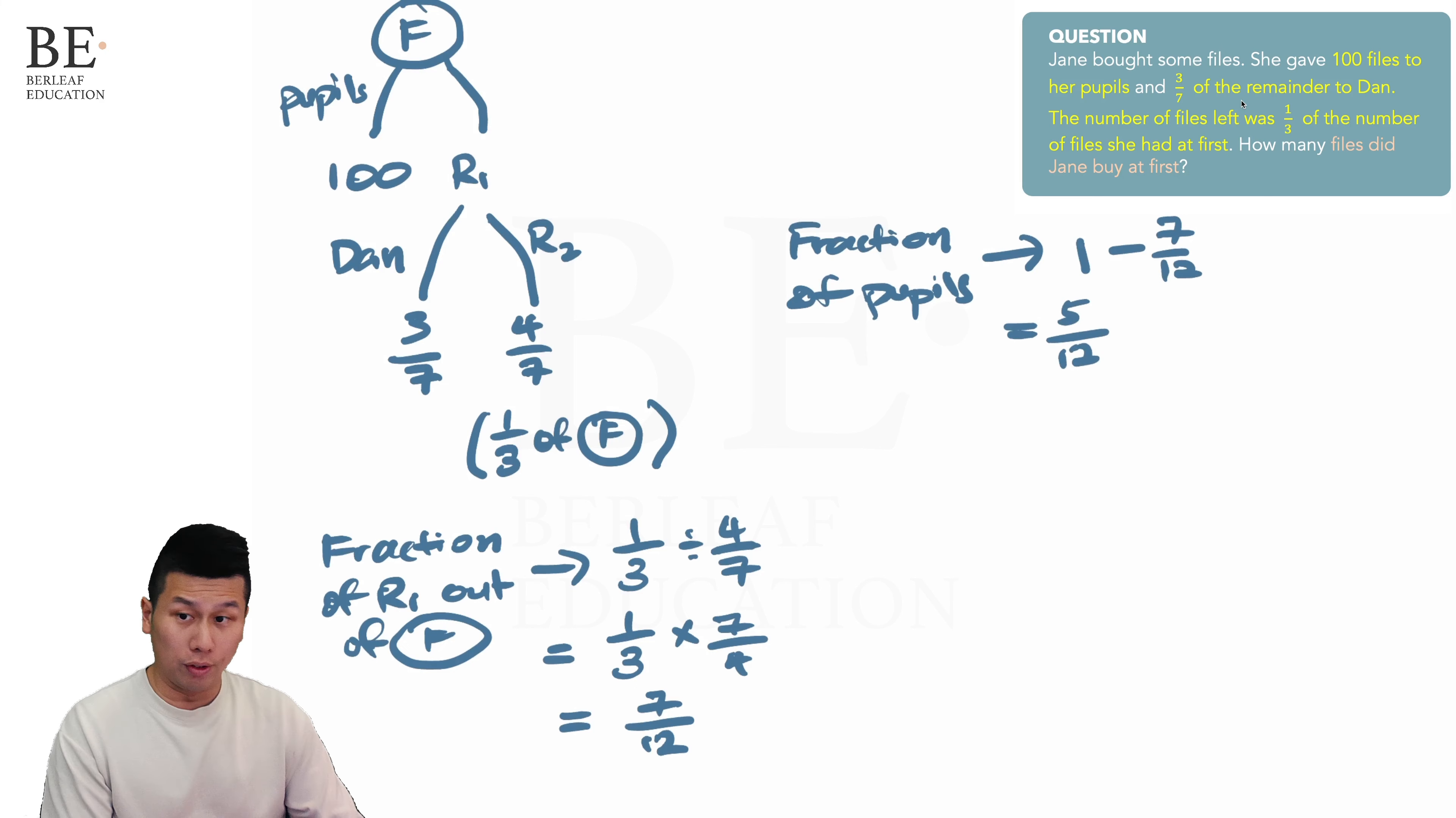So 5 over 12 actually represents 100, and in order to find the total number of files, we can simply find 12 over 12, which is using 100 multiplied by 12 over 5, giving us 240 files.